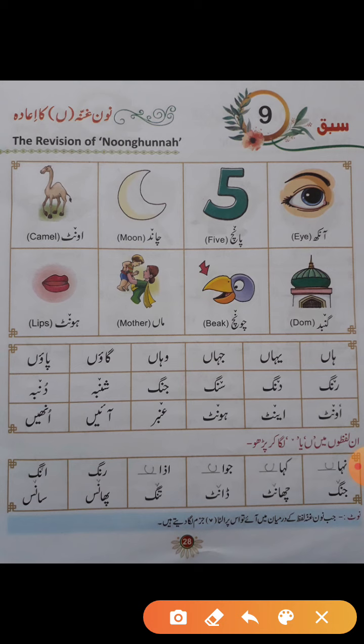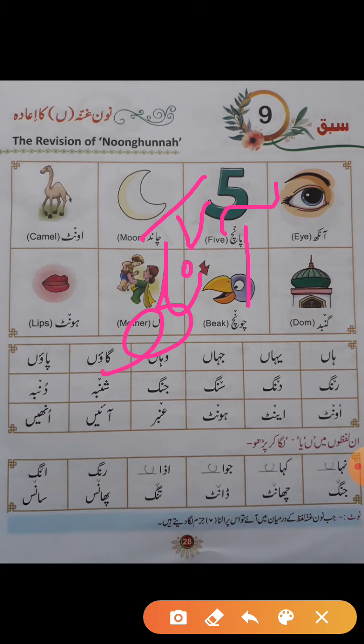جیسے آنکھ ہے — اس میں ہم نے نون لکھا لیکن ہم اسے پورا پڑھیں گے نہیں، یہ ناک میں آواز ہے تو ہم پڑھیں گے: آنکھ، پانچ۔ ہم نے الف، مذہبرا، نون، کاف لکھا — آنکھ میں جو نون لکھا وہ پورا ہے لیکن ناک میں پڑھیں گے۔ ہم اس پر ایسے الٹا ایرو لگاتے ہیں — یہ ہمارا نون غنہ کا نشان ہے۔